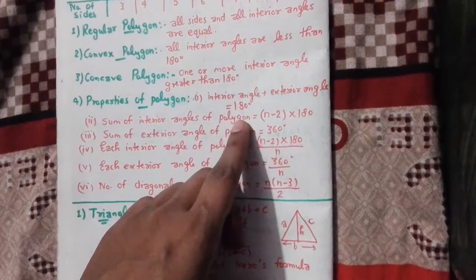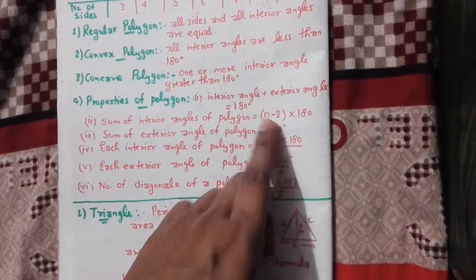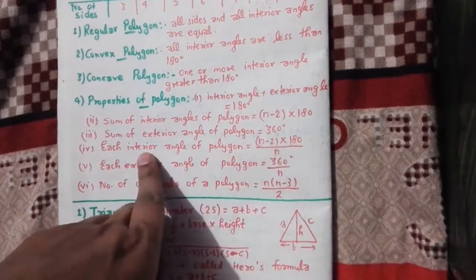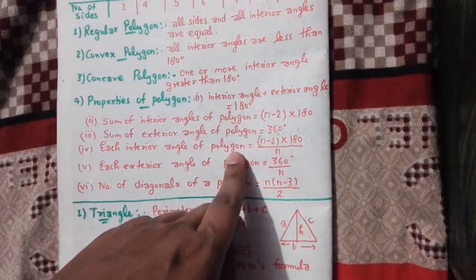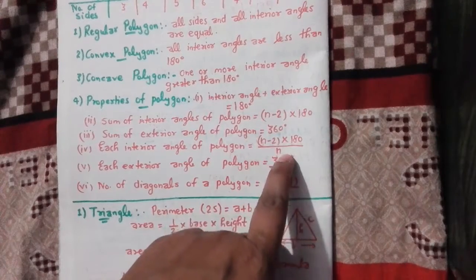Sum of interior angles of polygon: (n-2) × 180. Sum of exterior angles of polygon? 360 degrees. Each interior angle of polygon: sum divided by number of sides.